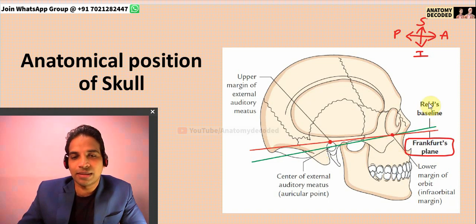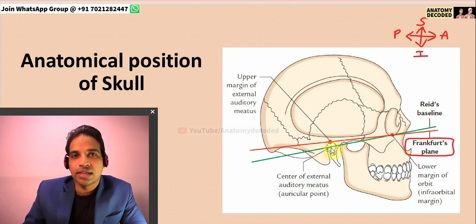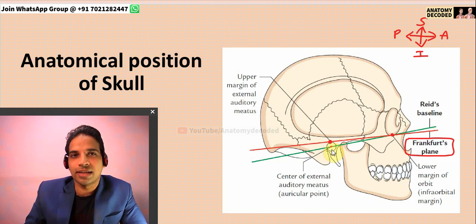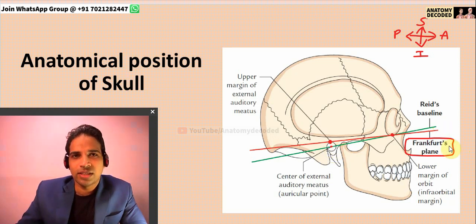There is one more line described with respect to the anatomical position of the skull: Reid's baseline. In this, one point is constant — the inferior margin of the orbit — and the other point passes through the middle of the external acoustic meatus. For Reid's baseline, the posterior point is at the center of the external acoustic meatus. Frankfurt's plane is more preferred for holding the skull in anatomical position.